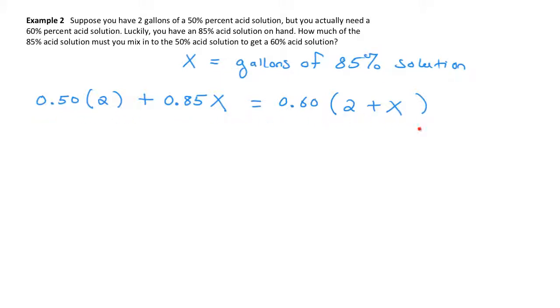So this equation is really similar to the previous example, but the only difference is x appears in two locations. I'm again going to ignore the context of this problem and just focus on solving this equation. I'll distribute the 0.6, combine some like terms, and go from there. So 0.5 times 2 is just 1, and then my 0.85x I can't do anything with. Now I can distribute the 0.6. I get 1.2 plus 0.60x. My strategy will be to subtract 0.6x from both sides. When I do that, I get 1 plus 0.25x is equal to 1.2. I'll then subtract 1 from both sides, and I get 0.25x is equal to 0.2. I then divide both sides by 0.25.